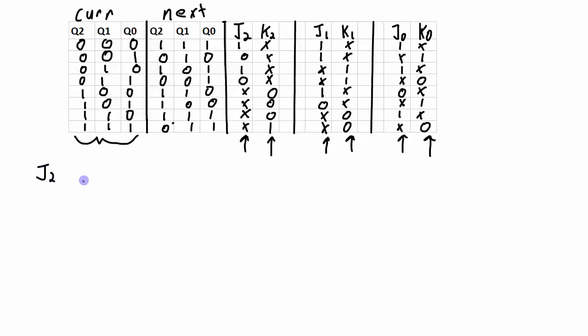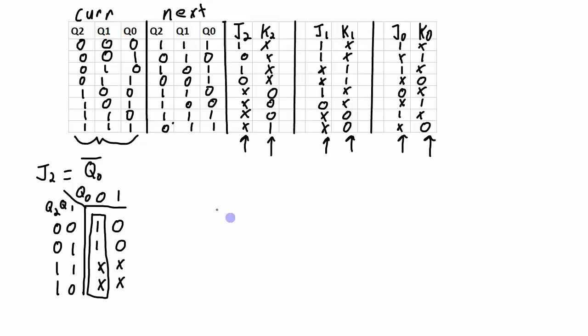Let's do J2 first. The inputs for J2, so J2 equals something, and the inputs for J2 are Q2, Q1, and Q0. And the values for filling in the Karnaugh map come from this column right here. And then we only need one group, and the expression then will be J2 is equal to not Q0.